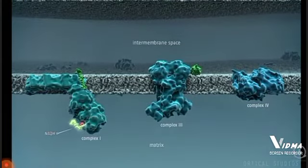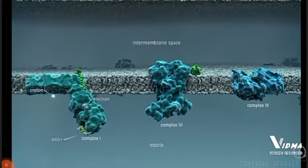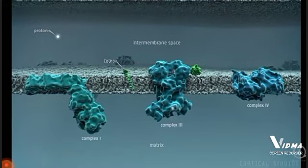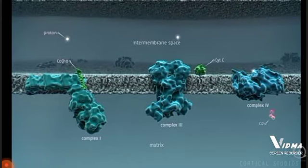Nutrients provide high-energy electrons in the form of NADH, which are used by the protein complexes to pump protons from the matrix to the intermembrane space.